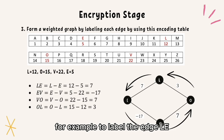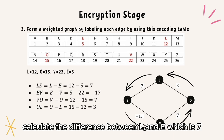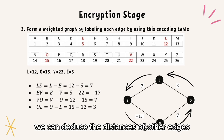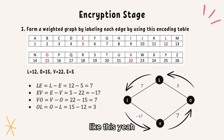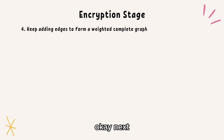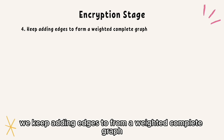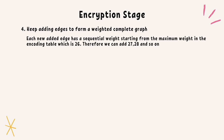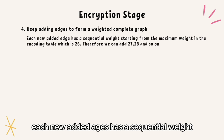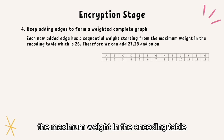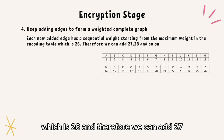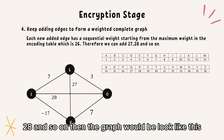For example, to label the edge L–E, calculate the difference between L and E, which is 7. Similarly, we can deduce the distances of the other edges like this. Next, we keep adding edges to form a weighted complete graph. Each newly added edge has a weight starting from the maximum weight in the encoding table, which is 26. Therefore, we can add 27, 28, and so on. The graph would then look like this.